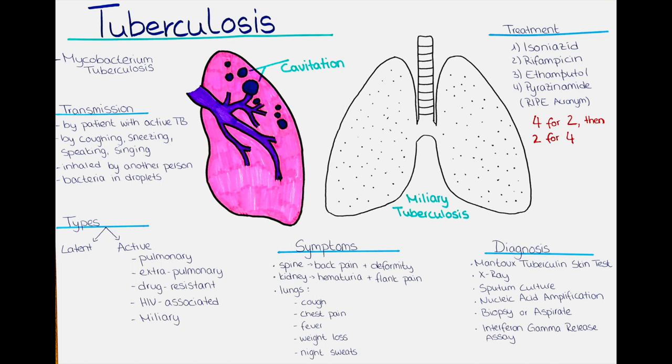Sometimes we can also see miliary tuberculosis on an X-ray, which may appear as numerous small white spots throughout the entire lung fields. It is important to note that none of these X-ray signs are specific to tuberculosis and can be seen in other lung diseases as well. Therefore, a positive X-ray alone is not enough to diagnose tuberculosis and additional tests such as sputum culture may be necessary for a definitive diagnosis.